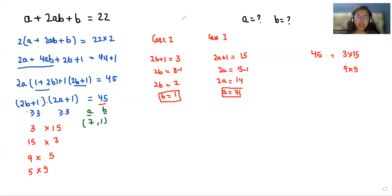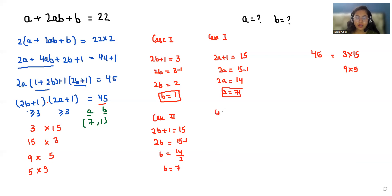Case 2: When 2b + 1 = 15, so 2b = 14 and b = 7. And when 2a + 1 = 3, so a = 1. So in this case our values are (a, b) = (1, 7).